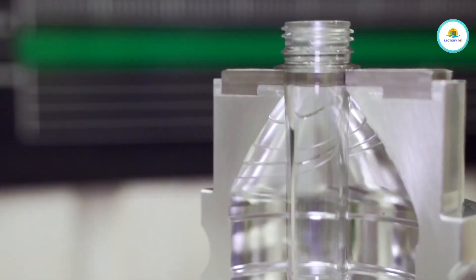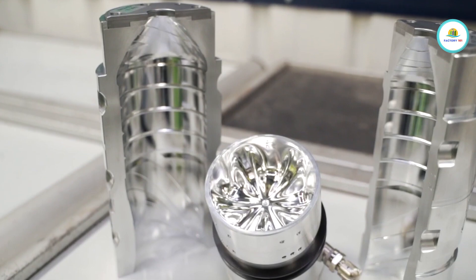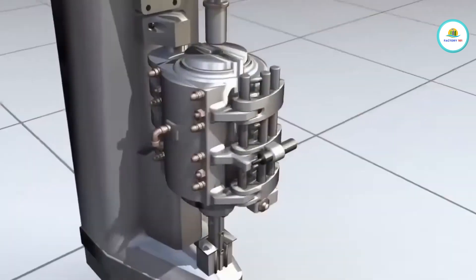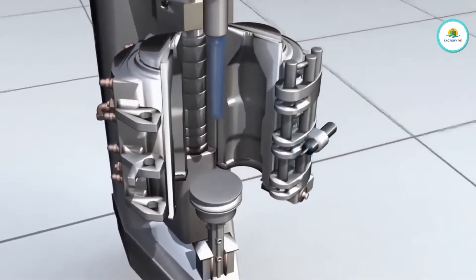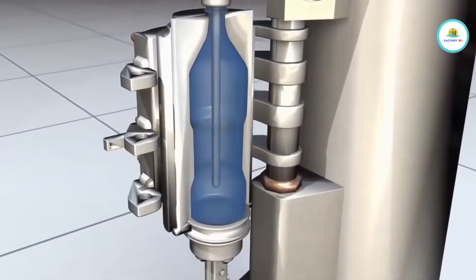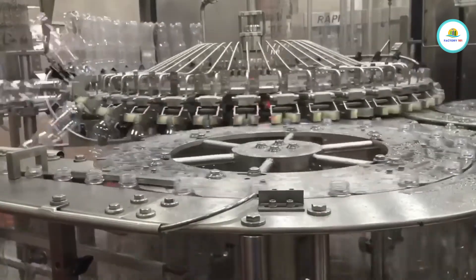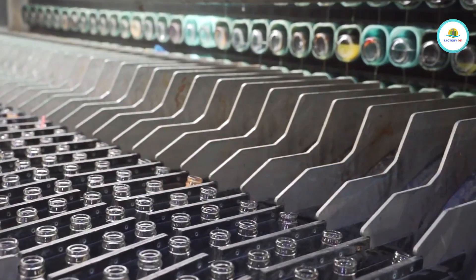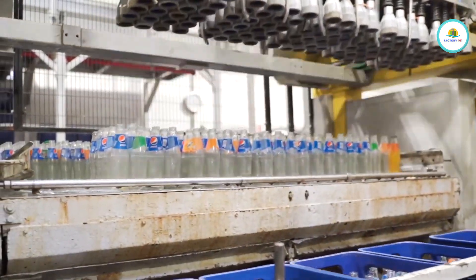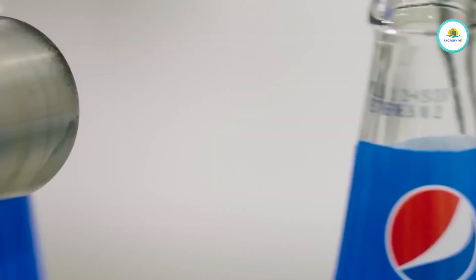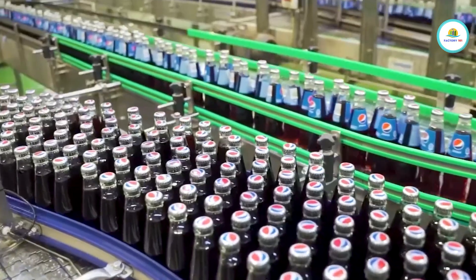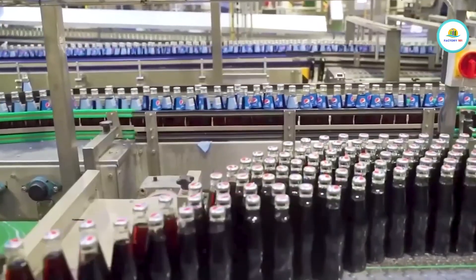Let's talk packaging. Most Pepsi products are packaged in PET plastic bottles, which start off as tiny preforms. They look like mini test tubes. These preforms are heated, blown into molds, and cooled in a split second to form the bottles we know. Pepsi also uses aluminum cans and glass bottles, depending on the market. And fun fact, glass bottles are still considered by many to be the best tasting version because they don't interact with the beverage inside.